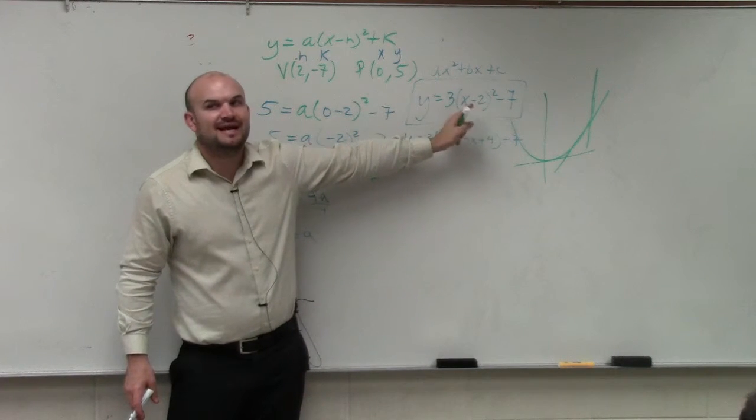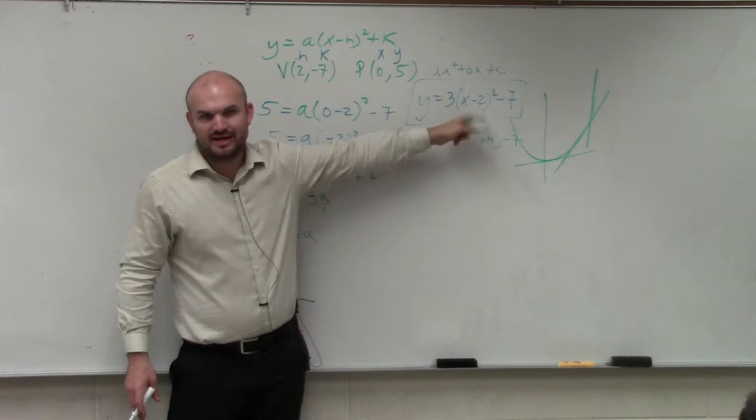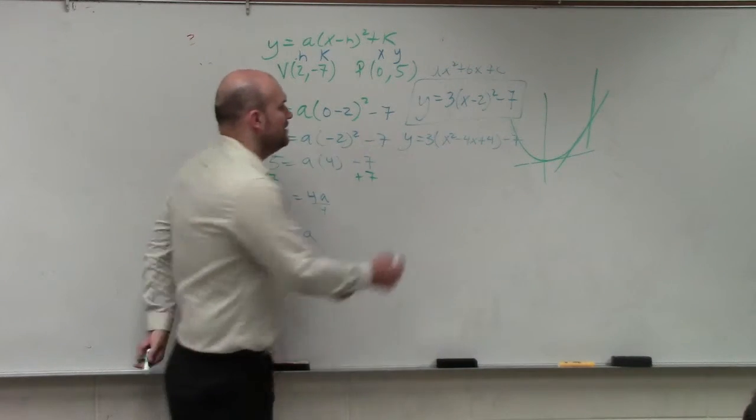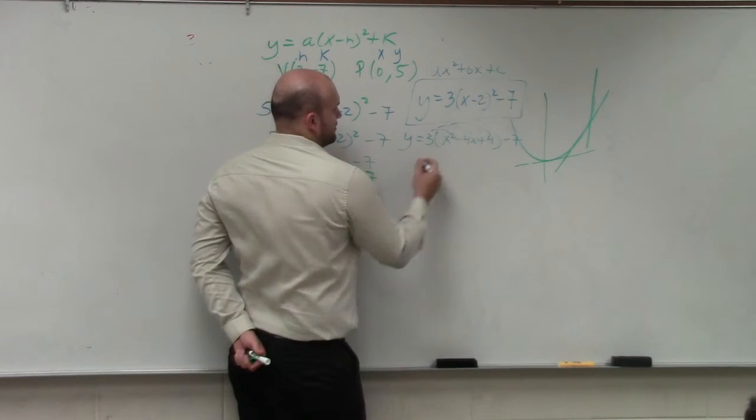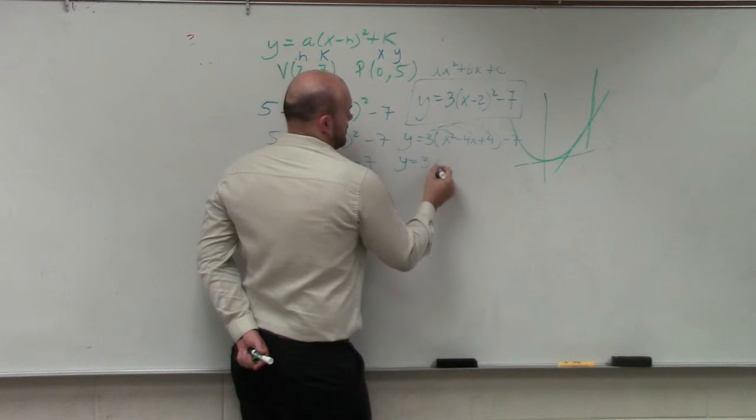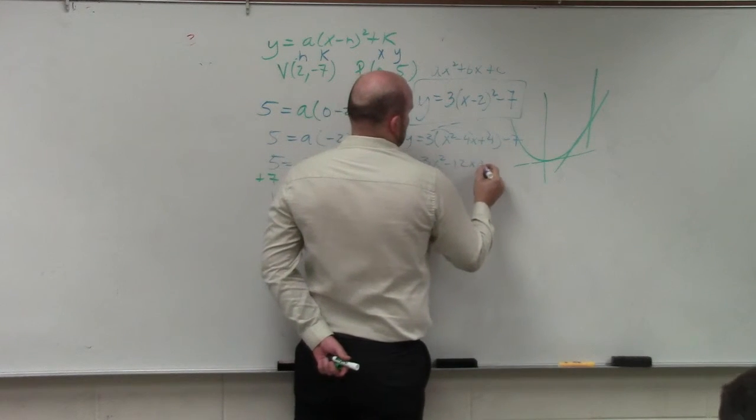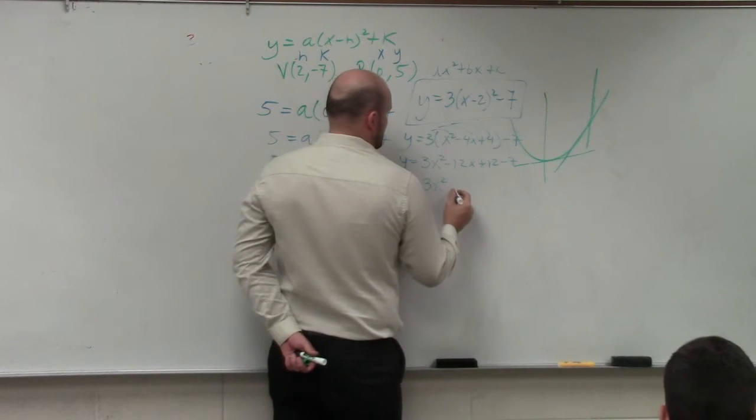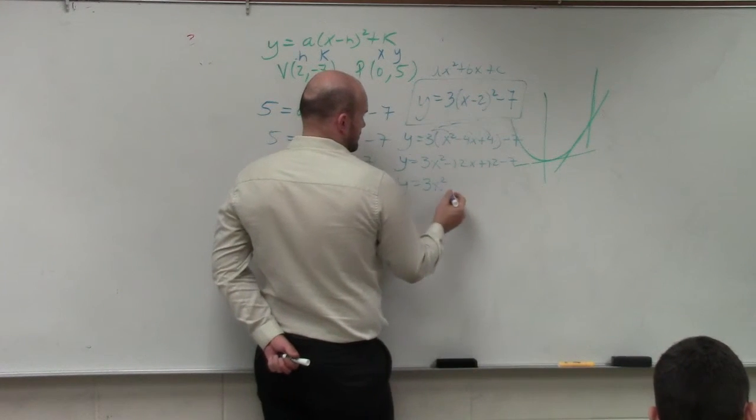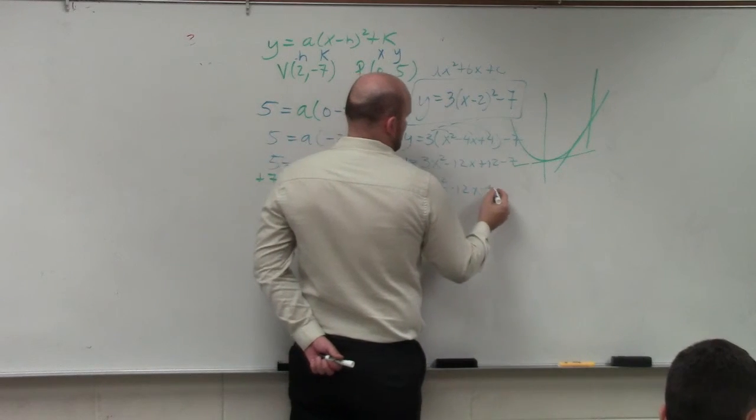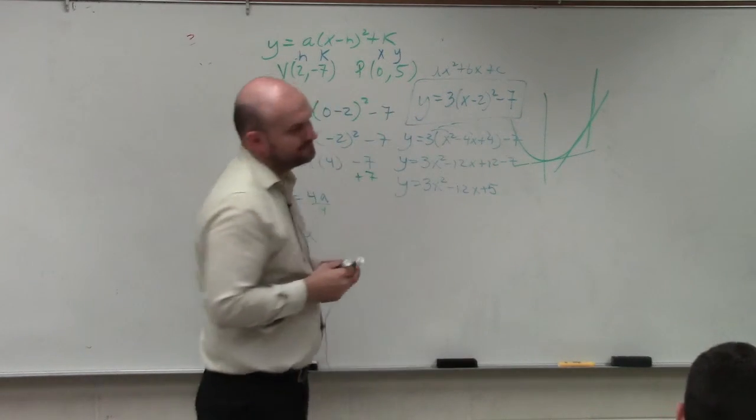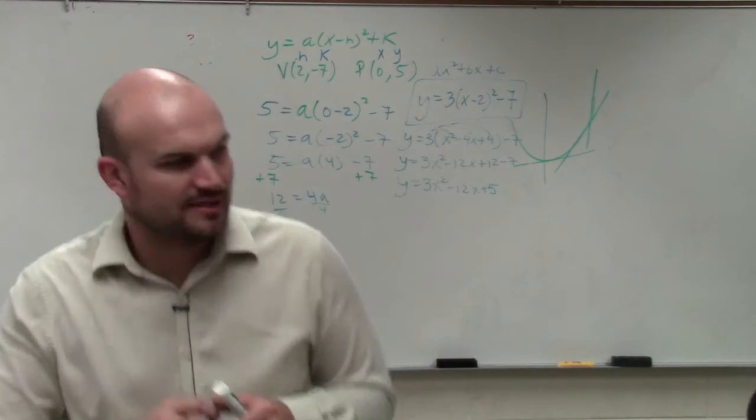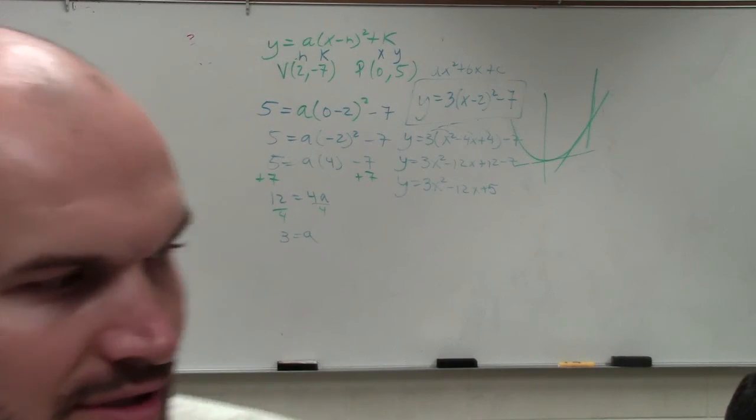Notice x minus 2 squared is not x squared plus 4. You can't distribute. Then I would distribute the 3. And your final answer in standard form would be that. Just in case there was a question asking you to do that, you can continue to do that.